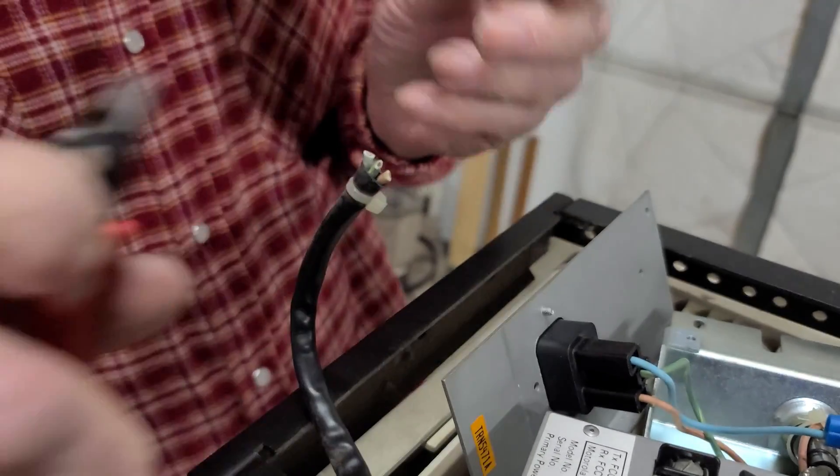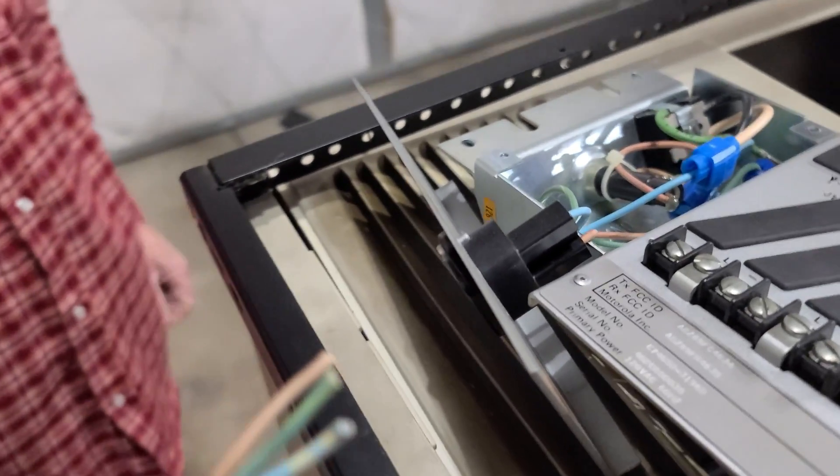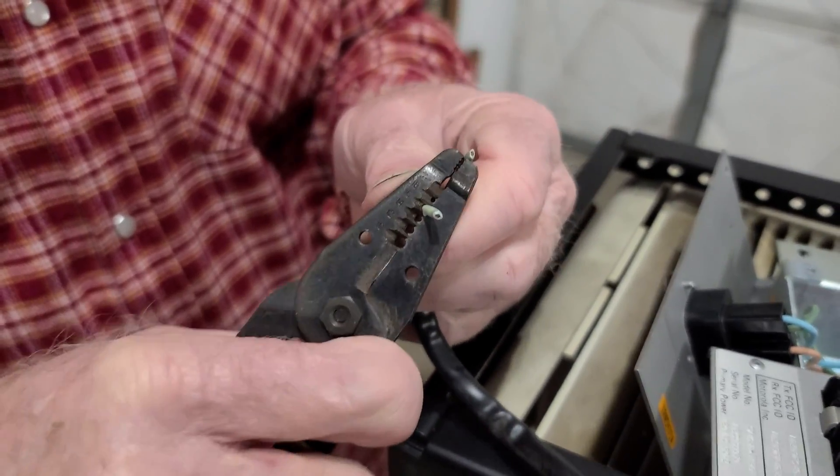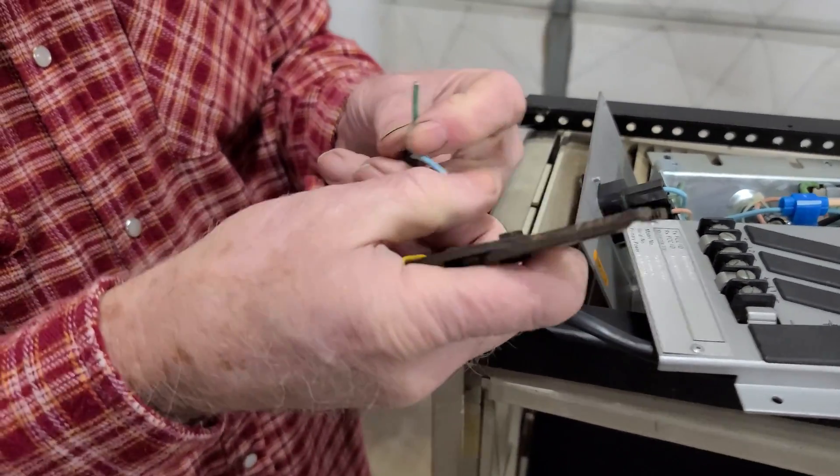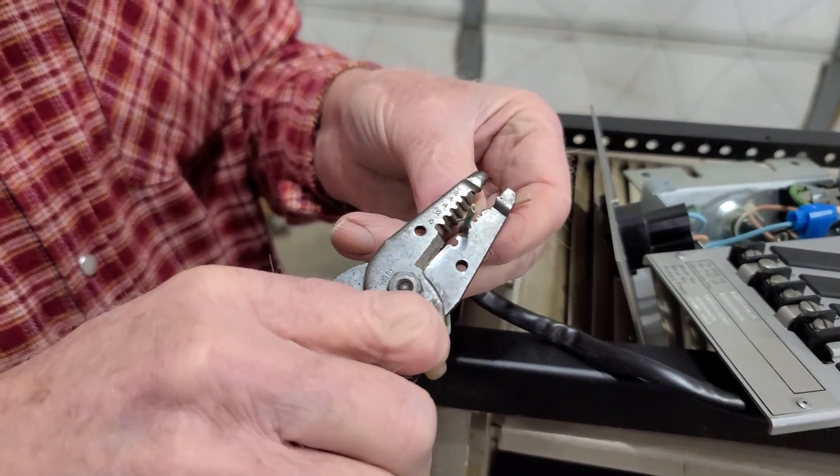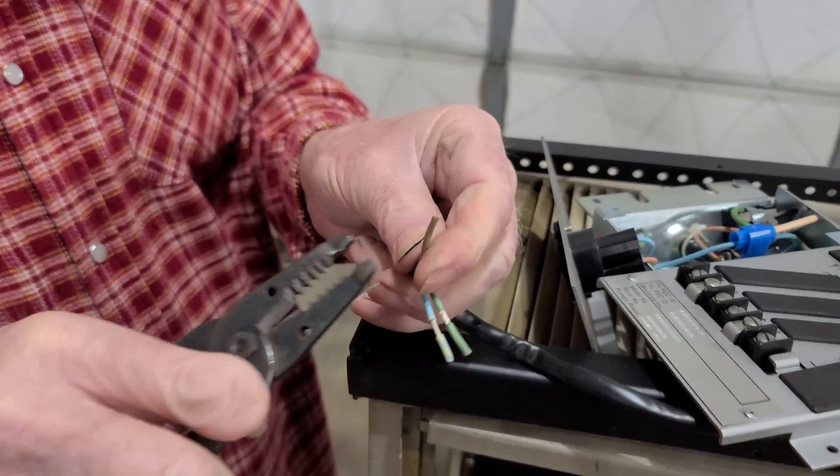Here we are clipping off that proprietary plug, and we're going to take the three wires here, your ground, your neutral, and your hot, and we're going to connect that to a standard three-prong plug that you can get from anywhere. You can see AC4DM is stripping off the ends so we can begin the installation of the three-prong plug.